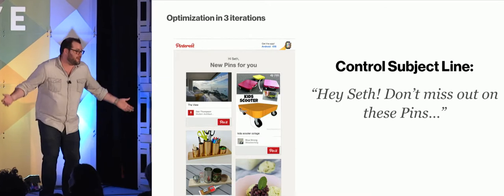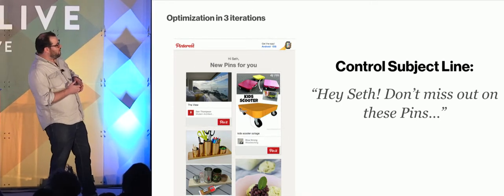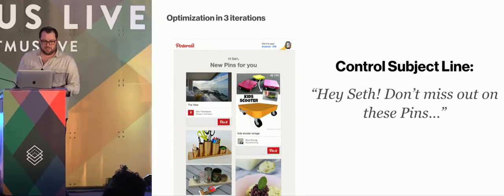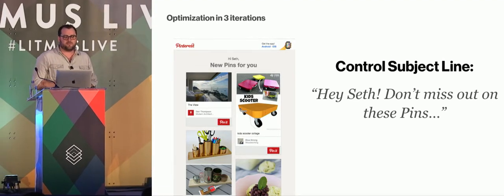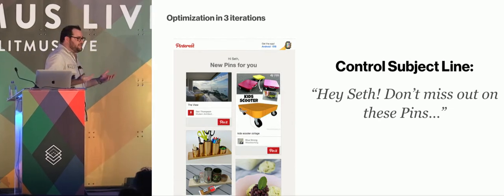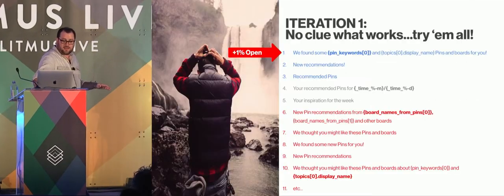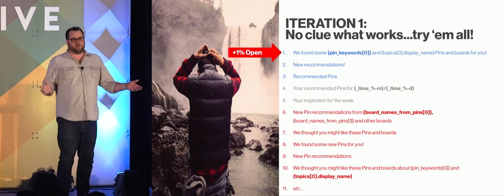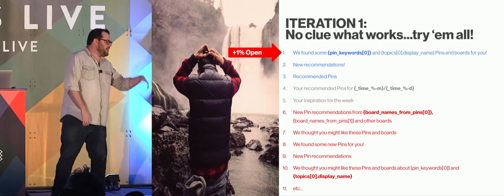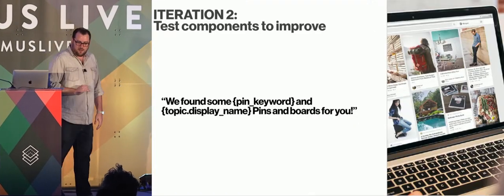We took a high-volume email — our weekly digest — and ran some experiments on it. The original subject line was 'Hey Seth, don't miss out on these pins' — pretty vague, not very evocative. We did literally 40 subject lines, tested them all, and got a winner that was only a 1% improvement. Very disappointing. But the engineer on the team, Cortiro, didn't give up. He took the winner and started iterating, adding different components — testing 'hey' versus 'hi,' 'some' versus 'new,' every type of replacement keyword he could find.